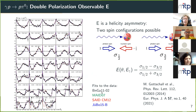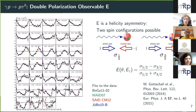One data set where we got an extensive result is the double polarization observable E for pion photoproduction. E is a helicity asymmetry: the photon spin can be parallel or anti-parallel to the nucleon spin, giving access to spin-dependent cross sections σ₁/₂ or σ₃/₂. The asymmetry of these two cross sections gives the polarization observable E. The data is shown for different energy bins and covers a broad energy range from 600 MeV to more than 2 GeV, and nearly the full angular range.